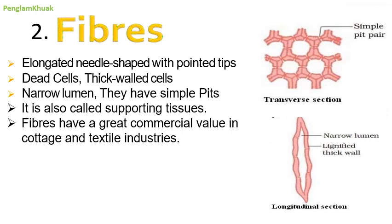The second type of sclerenchyma is fibers. In transverse and longitudinal section, fibers are elongated like a needle shape with pointed tips. All fibers are dead cells with thick cell walls, narrow lumen, and simple pits — small holes formed due to absence of secondary cell wall deposition — allowing cells to pass water and nutrients between adjacent plant cells. Fibers are called supporting tissue and have great commercial value in cottage and textile industries for producing ropes and other products.